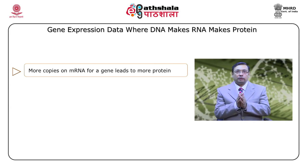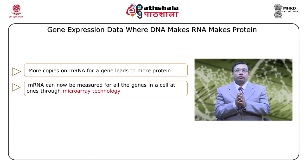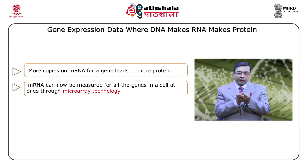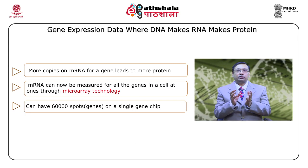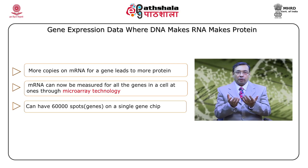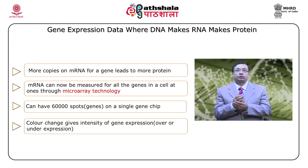What would be the gene expression data? Gene expression data: DNA makes RNA and RNA makes protein. More copies of mRNA for a gene leads to more protein. Based on the copy number, we get the protein. mRNA can now be measured for all the genes in a cell at one go through microarray technology, because it gives an opportunity to study many genes at one time. A gene chip can have 60,000 spots, and if we hybridize this chip with any probe, we can see color changes giving the intensity of gene expression — studied through software tools — and this is called the heat map.